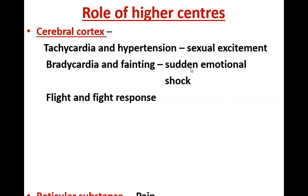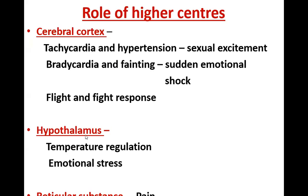Sudden emotional shock can result in bradycardia and fainting. The fight-or-flight response — whenever there is any adverse condition, you will either try to fly away from it or fight — stimulates the sympathetic nervous system, causing increase in heart rate and increase in blood pressure. Hypothalamus plays an important role in temperature regulation and emotional stress, and therefore also plays an important role in regulation of blood pressure and blood flow. Reticular substance plays an important role in pain.